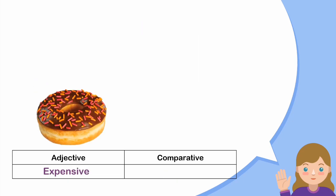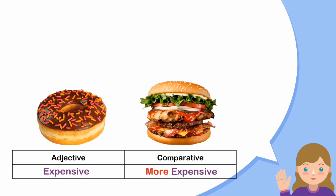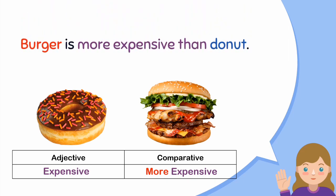'Expensive' → 'more expensive'. Kalau expensive, kita merubahnya bukan menjadi 'expensive-er', tetapi kita tambahkan 'more' di depannya. Jadi 'expensive' berubah menjadi 'more expensive'. Contoh: Burger is more expensive than donut.